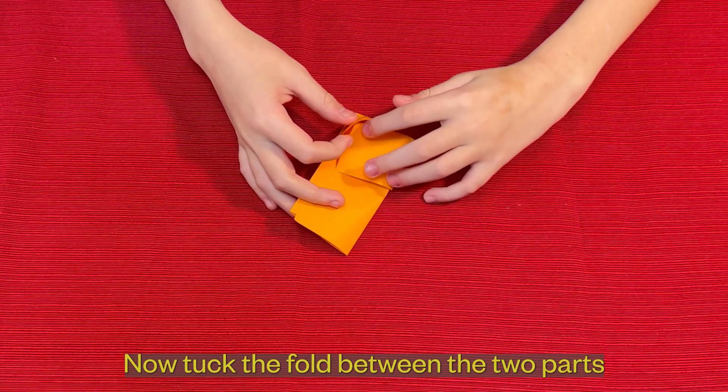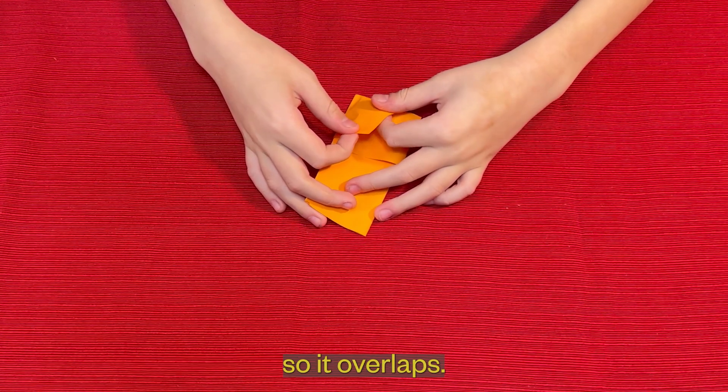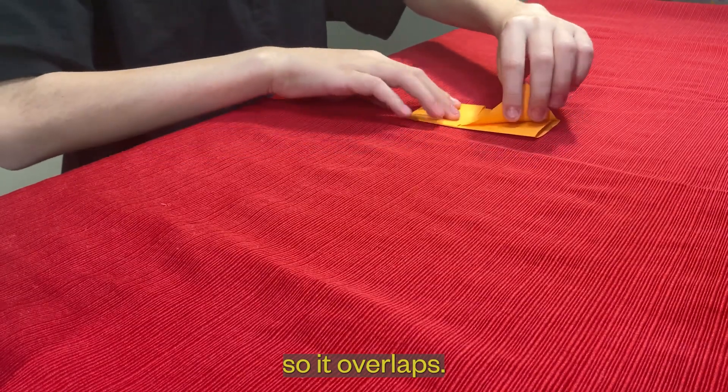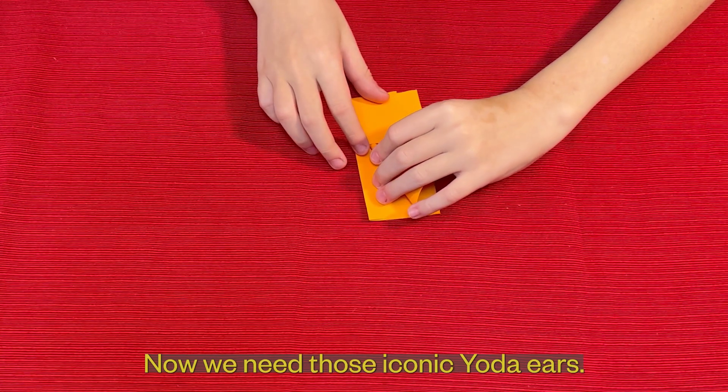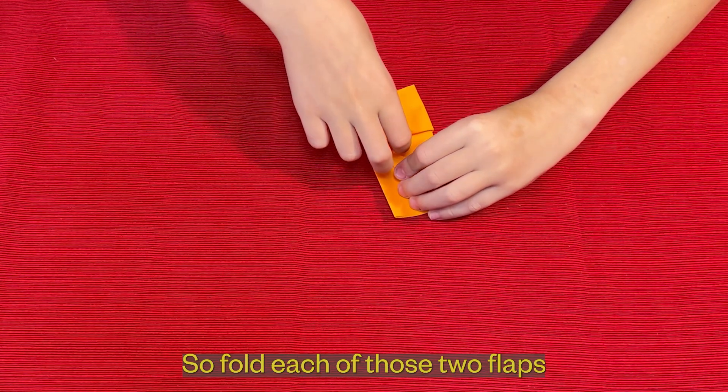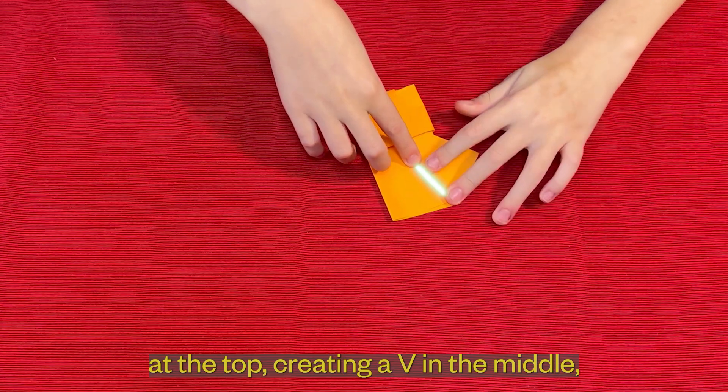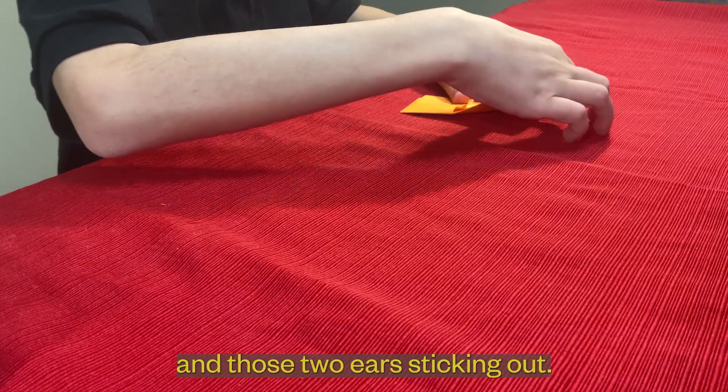Now tuck the fold between the two parts so it overlaps. Now we need those iconic Yoda ears. So fold each of those two flaps at the top, creating a V in the middle and those two ears sticking out.